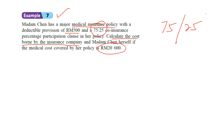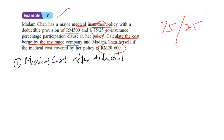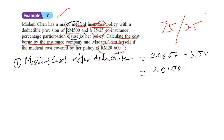First, you have to calculate the medical cost after the deductible, because she can only claim after paying the deductible. Medical cost after deductible = 20,600 minus 500, which gives 20,100. So 20,100 is the amount of medical cost subject to the co-insurance clause.